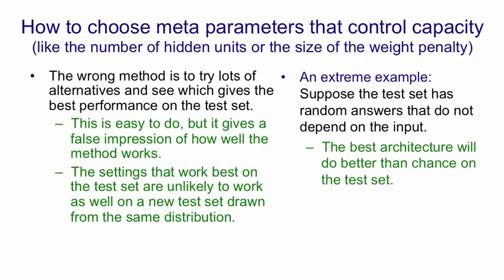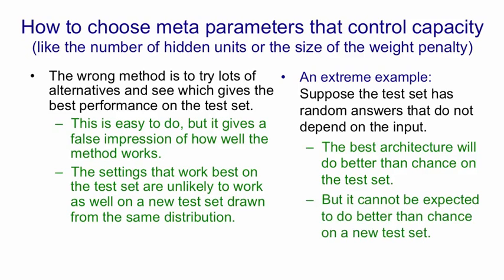If you choose the model that does best on your test set, that will obviously do better than chance, because you selected it to do better than chance. But if you take that model and try it on new data that's also random, you can't expect it to do better than chance. So by selecting a model, you get a false impression of how well a model will do on new data. And the question is, is there a way around that?